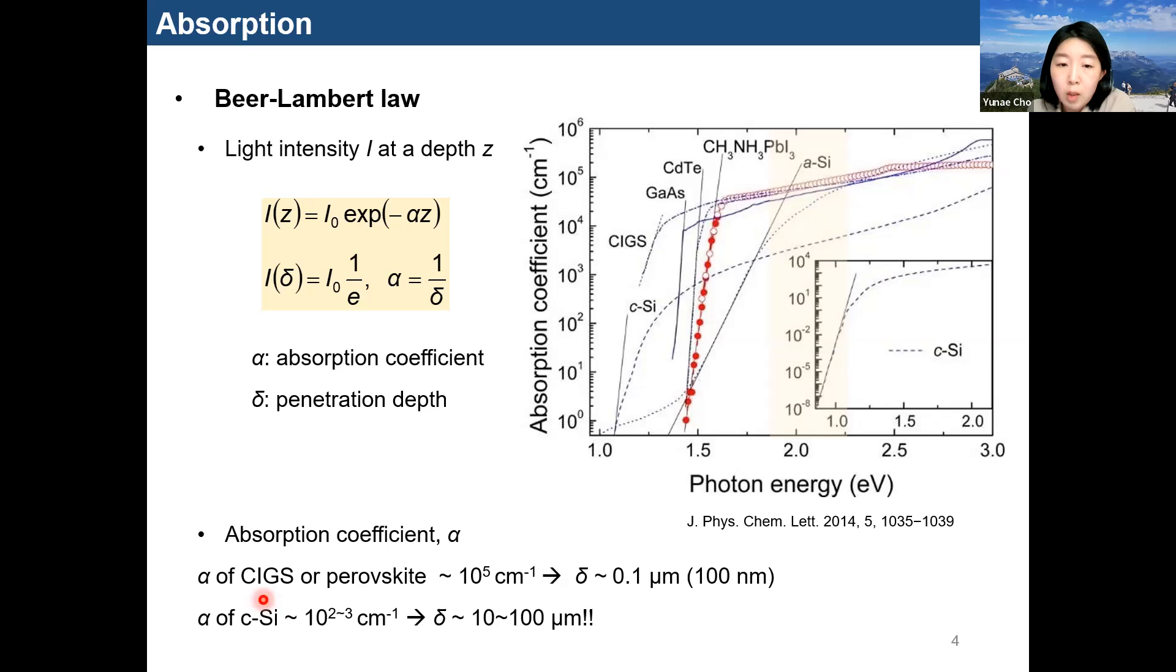Therefore, if you calculate the penetration depth, in case of CIGS and perovskite, they have a 0.1 micrometer penetration depth. However, in case of crystalline silicon, it needs from 10 to 100 micrometers thickness to minimize the transmission loss. In fact, the silicon solar cells have to have over 500 micrometer thick substrate.